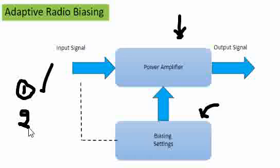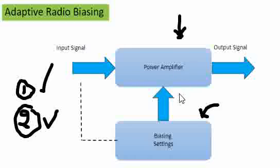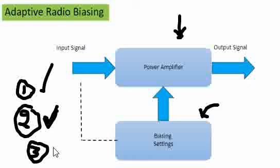The second factor is the bandwidth of the input signal. Higher bandwidth requires more power, so based on bandwidth requirements we have to adjust the power amplifier bias. The adaptive radio biasing adjusts to the bandwidth. Third, since the chip is used over wide output power ranges, based on the expected output power requirement we can also adjust the biasing.